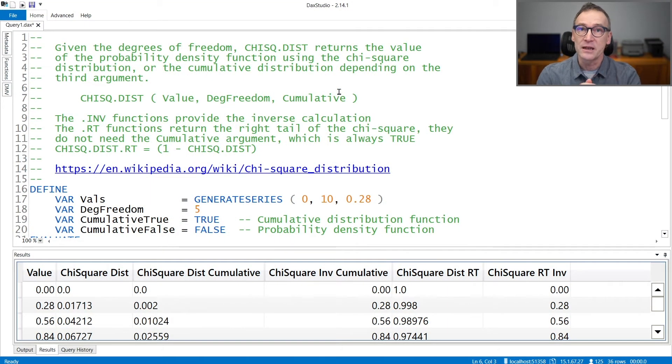CHISQ.DIST is a statistical function that implements the probability density function of a chi-squared distribution. You need to provide the value for which you want to run the function and the degrees of freedom that changes the shape of the distribution function.